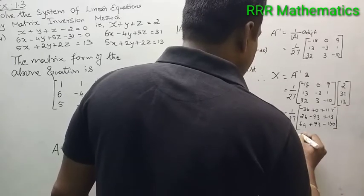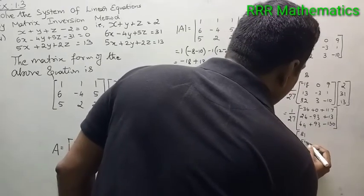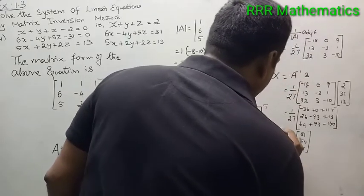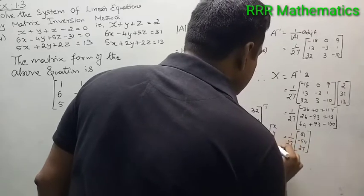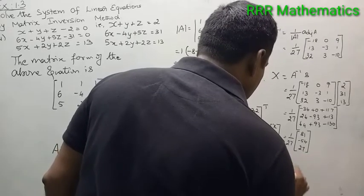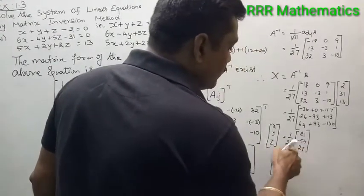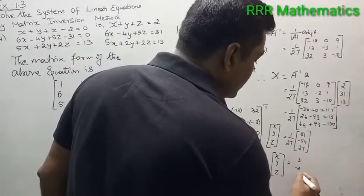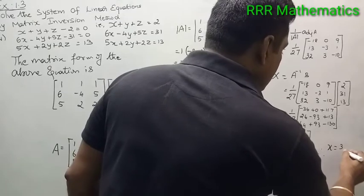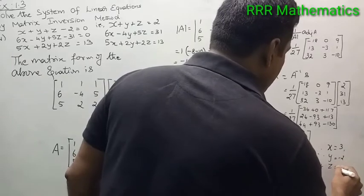1 by 27. When you simplify: row 1 sum gives 81, row 2 sum gives minus 54, row 3 sum gives 27. Now divide each by 27: 81 by 27 is 3, minus 54 by 27 is minus 2, 27 by 27 is 1. Therefore x equals 3, y equals minus 2, and z equals 1.